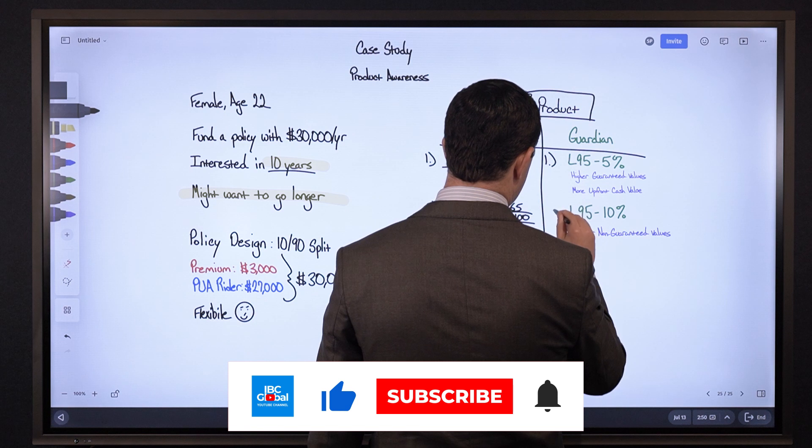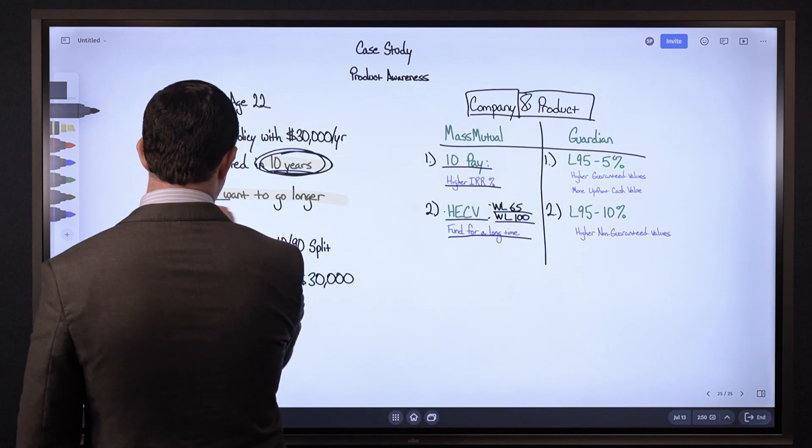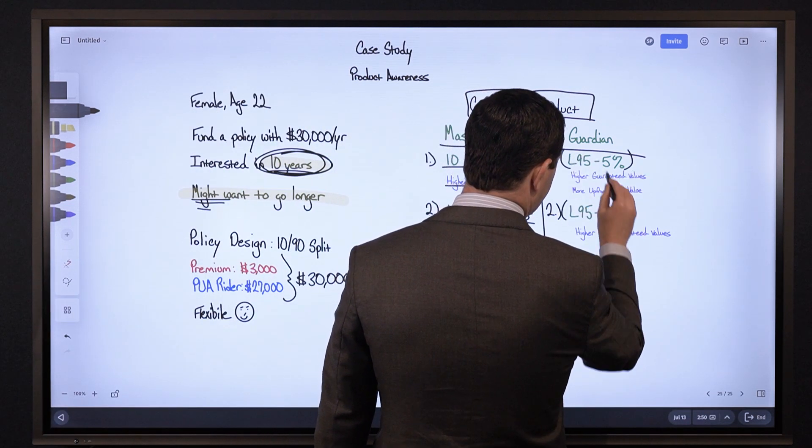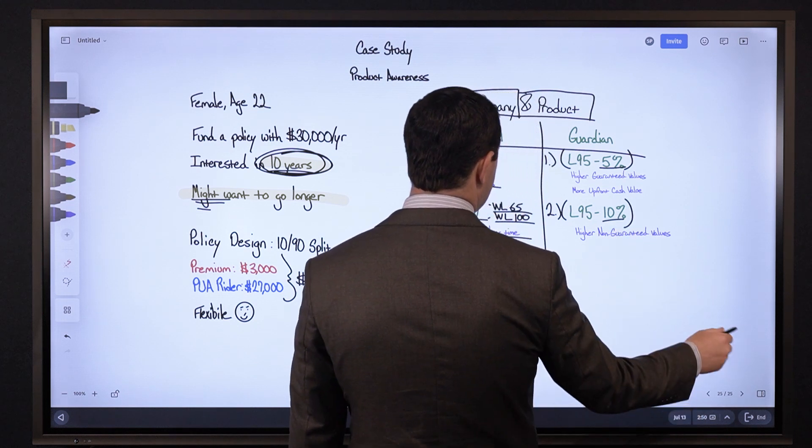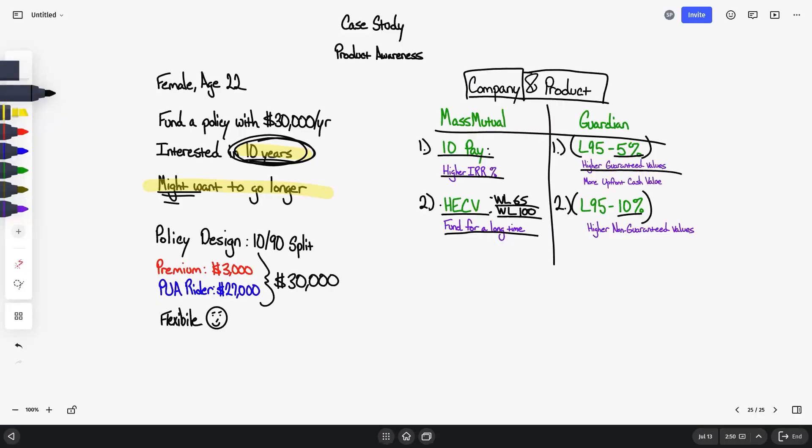With Guardian what we did was look at just the 10-year because that's what she mentioned, and this was a maybe I might want to add more beyond that. With both their 5% and 10% PUA fee. Quickly how that works is with the L95, the 5% PUA fee I've got higher guaranteed values and more upfront cash value. Whereas with a 10% PUA fee on the non-guaranteed values, I'll have greater long-term performance, not upfront. So with these we're going to look at 10-year funding.